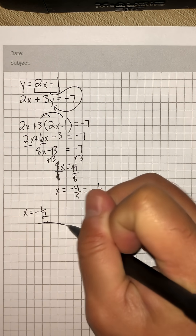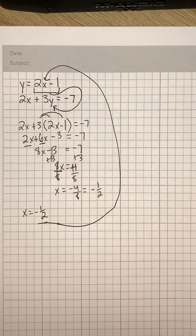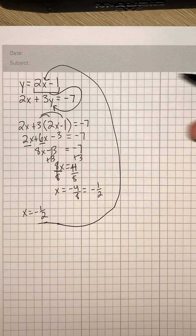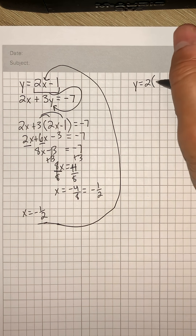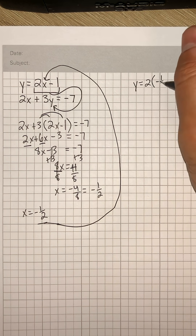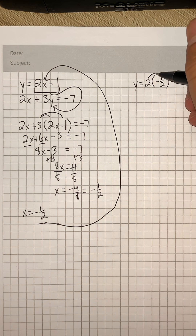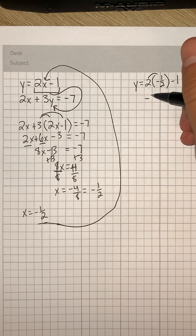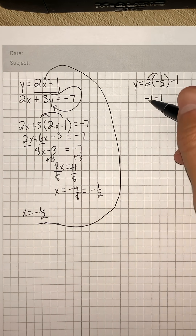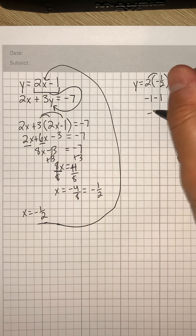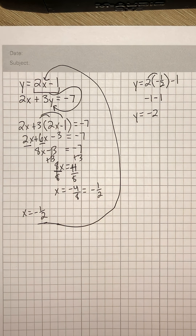Now we can take this number and substitute it in for x in our first equation. So we'll have y is equal to 2 times negative 1 half, minus 1. So 2 times negative 1 half is negative 1, and then we bring down our minus 1. So negative 1 minus 1 is negative 2, and y is equal to negative 2.